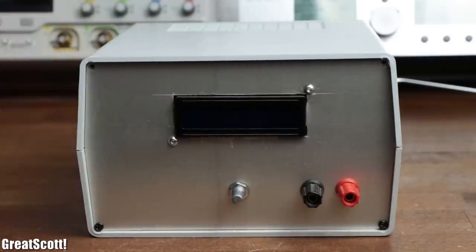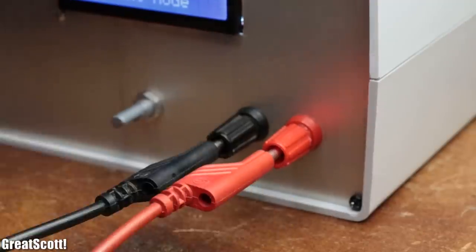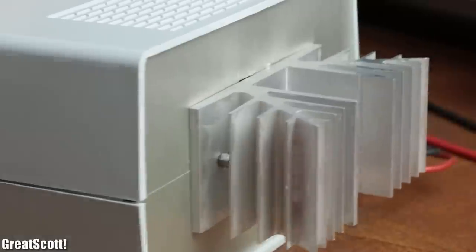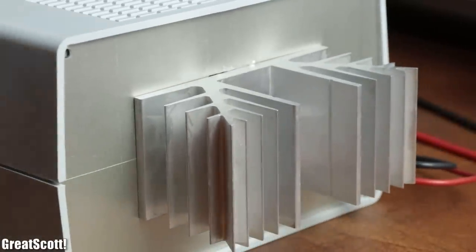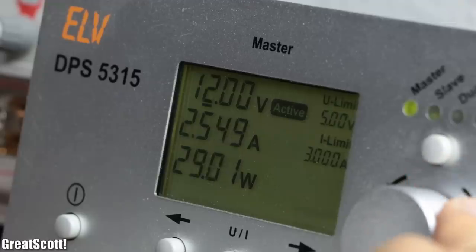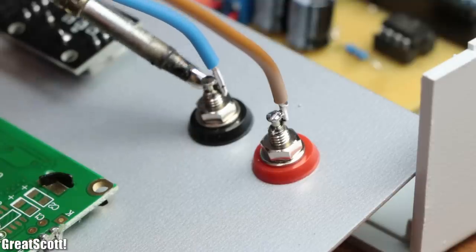So in this video, let's step it up a notch and create a very intuitive to use adjustable constant load which not only offers a constant current and constant power modes, but can also dissipate a lot more heat due to its heatsink and thus can be used for much higher current and power levels. So let's not waste any more time and let's find out how I made it.